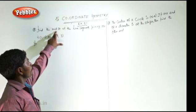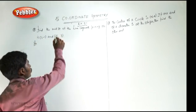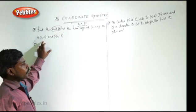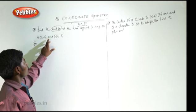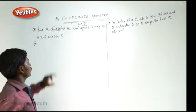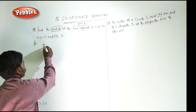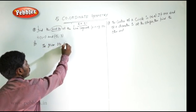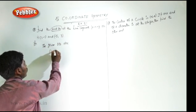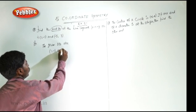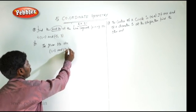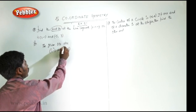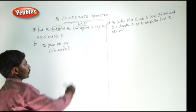Question number 1: find the midpoint of the line segment joining points (1, -1) and (-5, 3). The given points are (1, -1) and (-5, 3). We put the names x1, y1, x2, y2 for the coordinates.